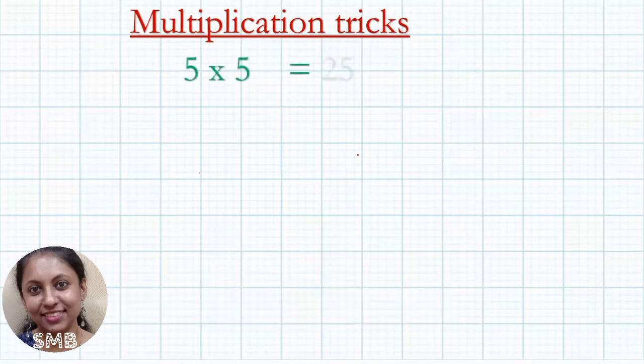5 into 5 is 25. Then what is 55 into 5? First you have to write 2 and the last digit 5, and in the middle 2 plus 5 is 7 that you can write in the middle. 275 is the answer.